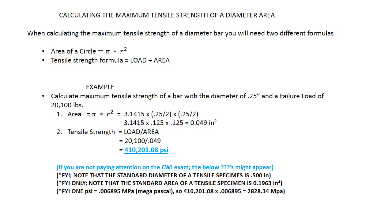Next, we're going to find the tensile strength, which is load over area. The load failed at 20,100 pounds divided by 0.049. The answer is 410,201.08 pounds per square inch.